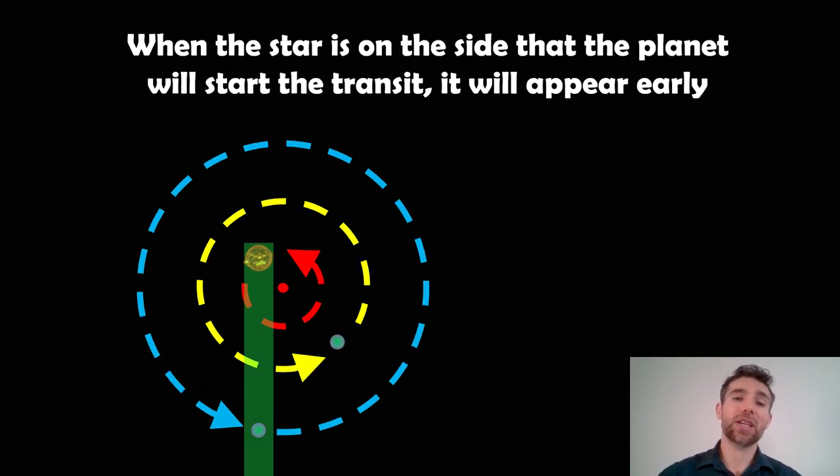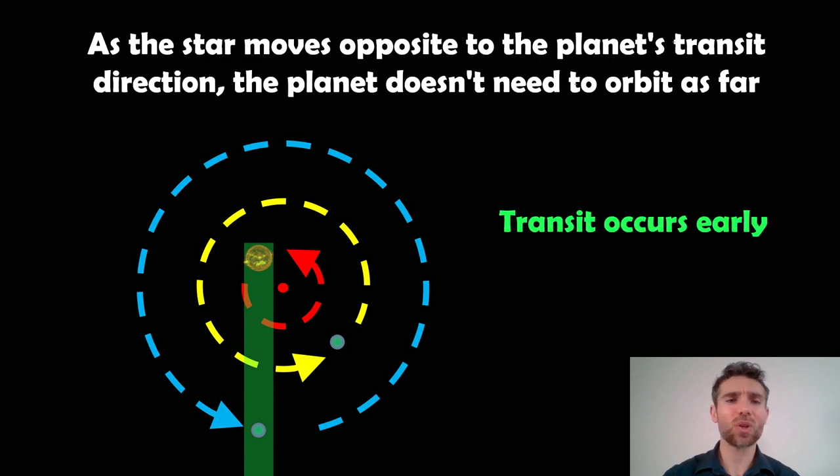Now, if the star is on the side of the planet, or is on the side where the planet will transit, like this here, so we're looking kind of from the bottom up, down that kind of green area there, that's where it's going to be transiting across, it's going to appear early. So the star is orbiting around the barycentre, and it's over towards the left, which is the same side that the transiting exoplanet is going to pass across. In this case here, it's going to give you a slightly early transit. Why is that?